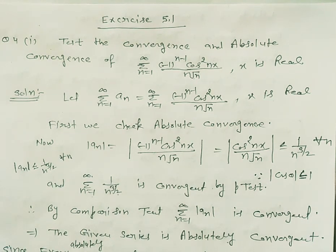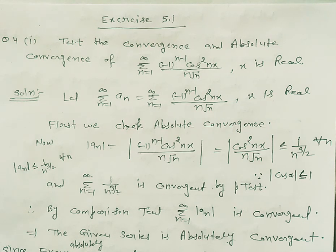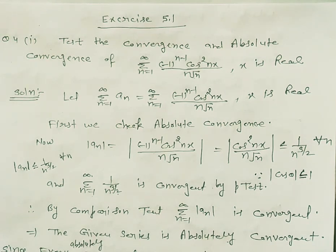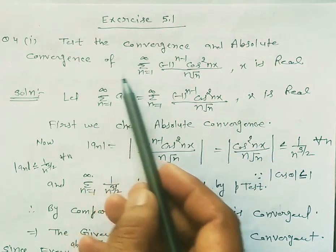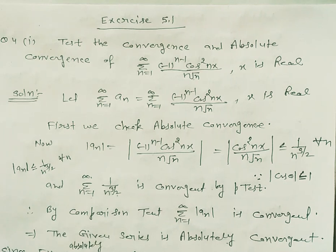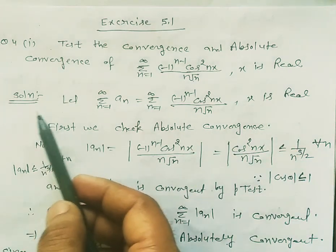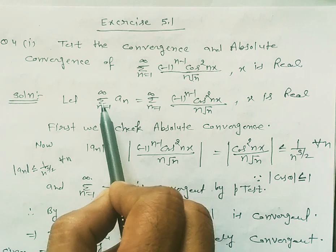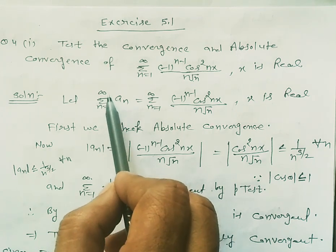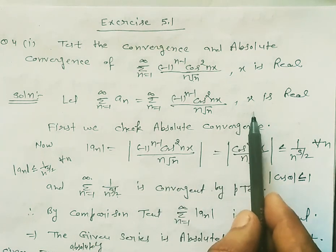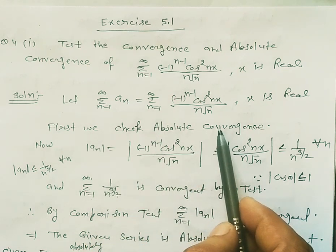Good morning students. Today we discuss Exercise 5.1, Question number 4 on the topic of alternating series. We check the convergence, absolute convergence, and conditional convergence of an alternating series. The given series is summation n=1 to infinity of (-1)^(n-1) * (n * x) / (n * √n), where x is any real number.